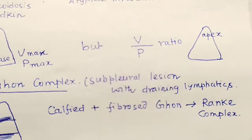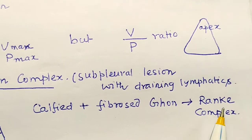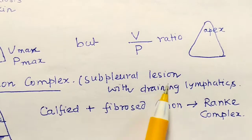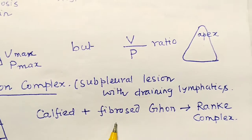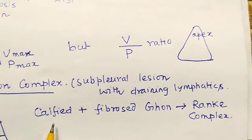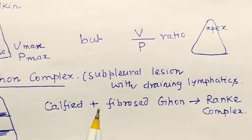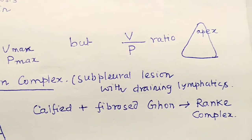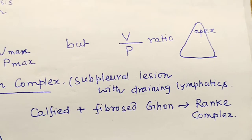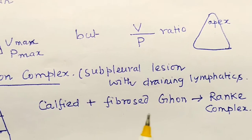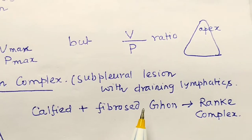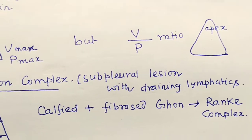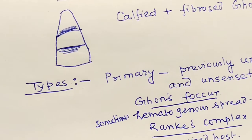Another complex is Ranke's complex. When the Ghon complex has become fibrosed and calcified, it is known as Ranke's complex. So Ranke's complex is essentially a fibrosed and calcified Ghon complex.